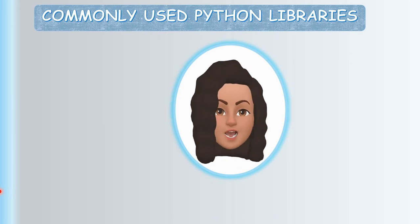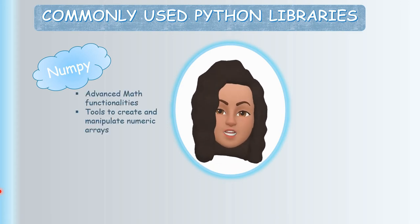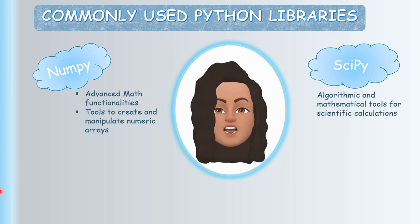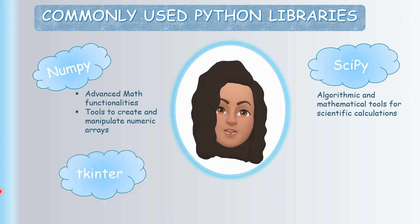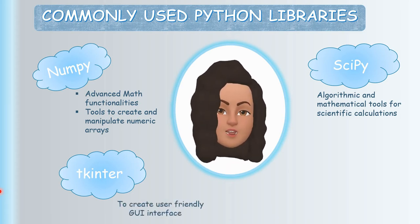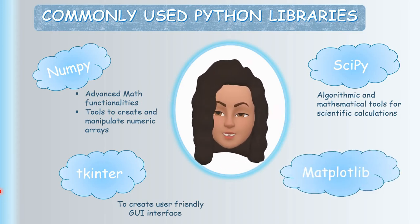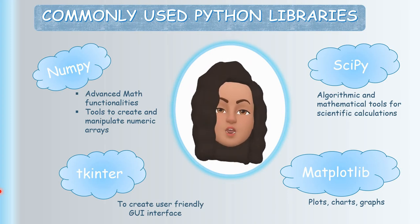The next commonly used library is NumPy, which provides advanced mathematical functionalities and tools to create and manipulate numeric arrays. SciPy is used for algorithmic and mathematical tools for scientific calculations. Tkinter helps us create a user-friendly GUI interface. Matplotlib provides many tools to produce quality output in a variety of formats such as plots, charts, and graphs.